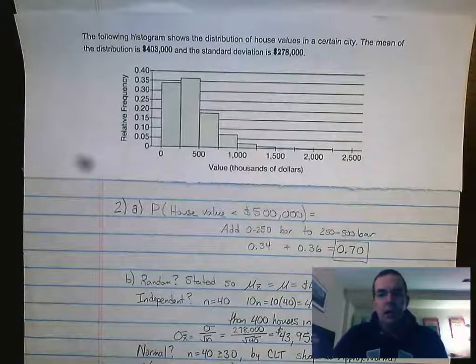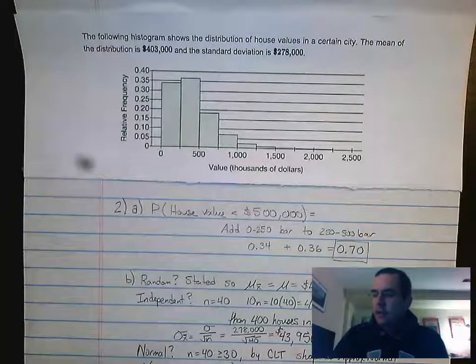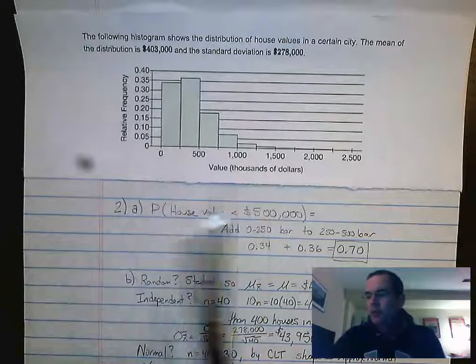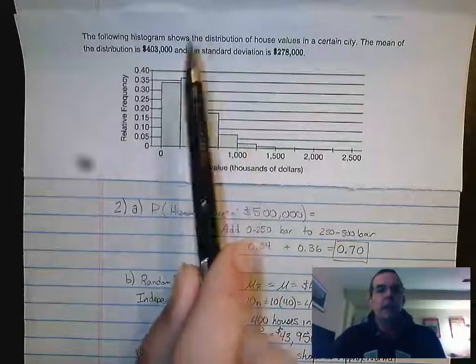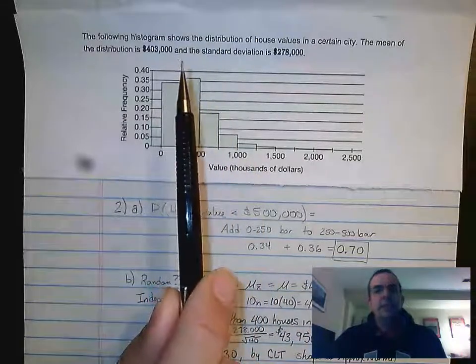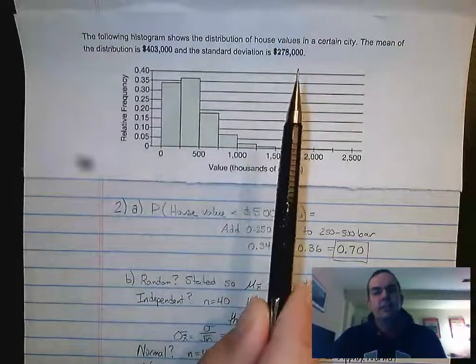Moving on to question two from Progress Check 5. This one asks you to investigate a histogram that they provided for you. So this is our histogram. It has a mean of $403,000 and a standard deviation of $278,000.